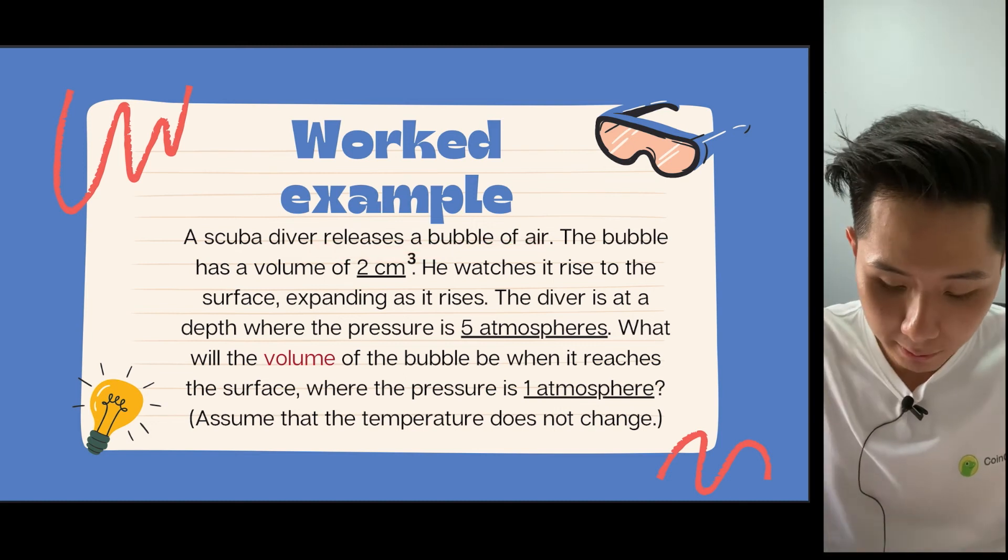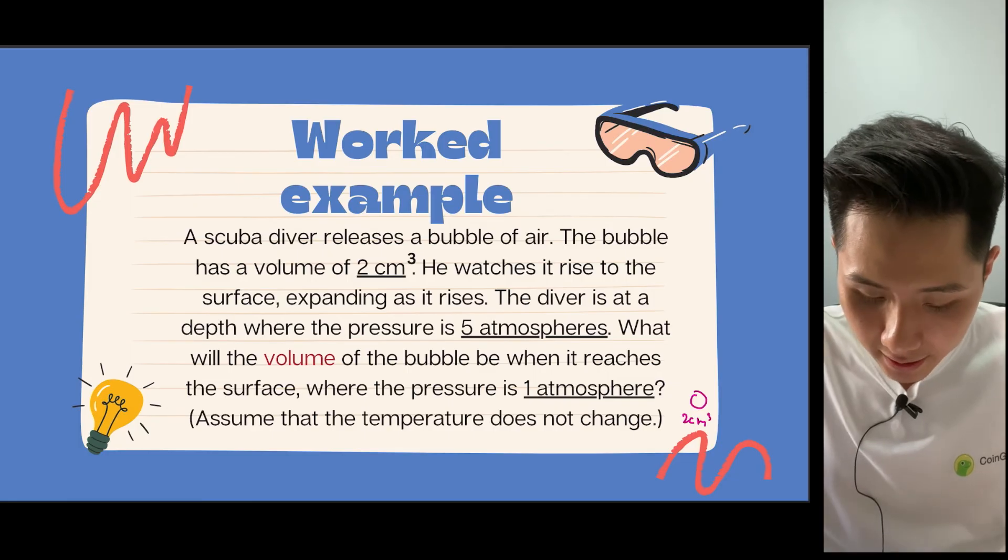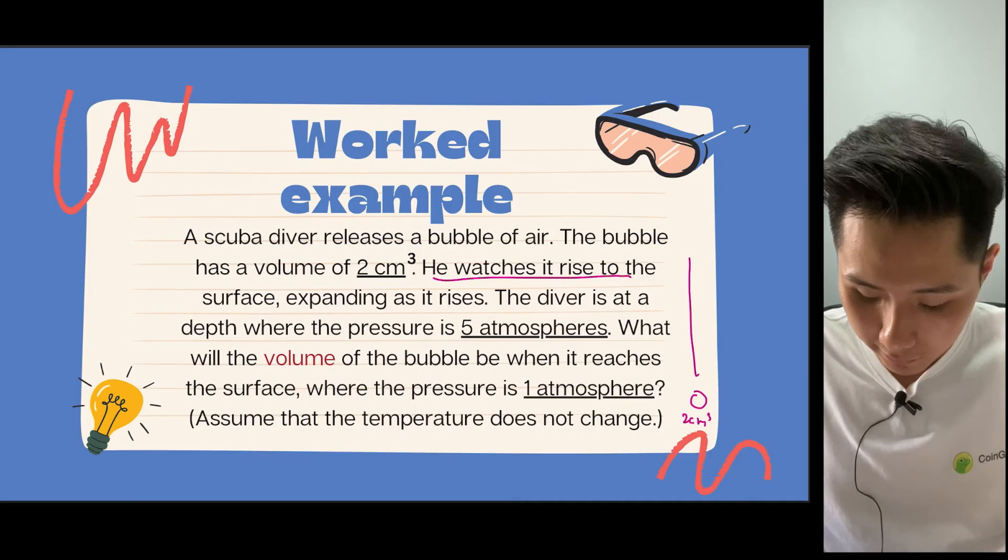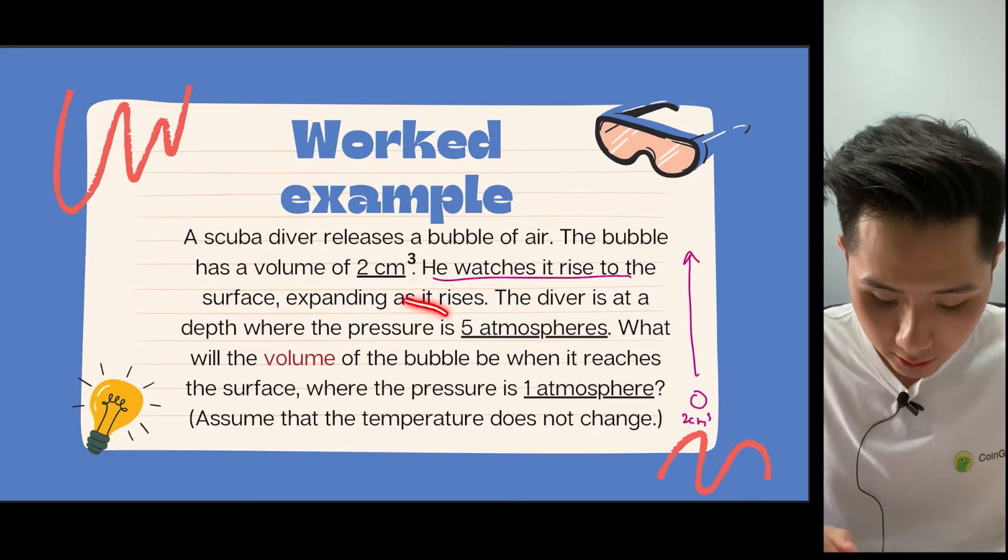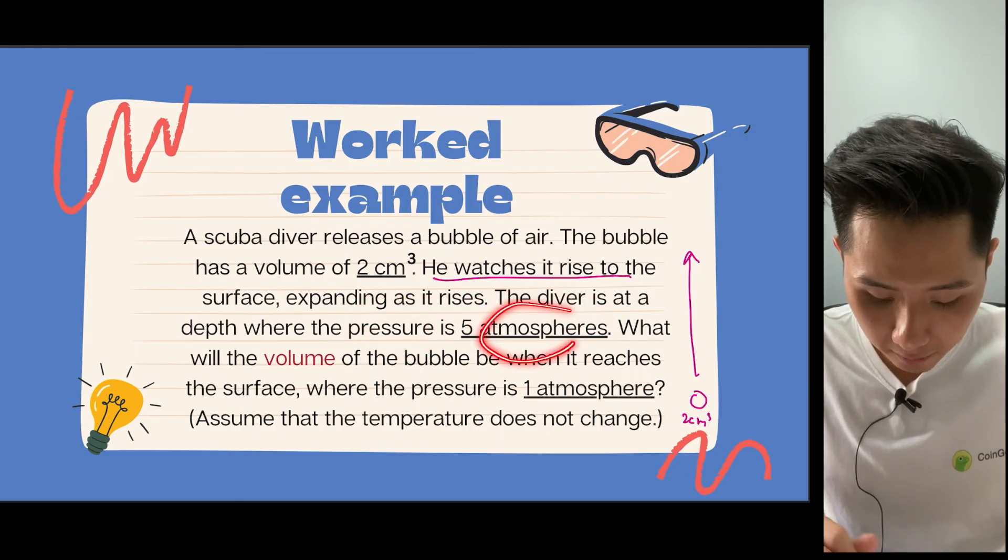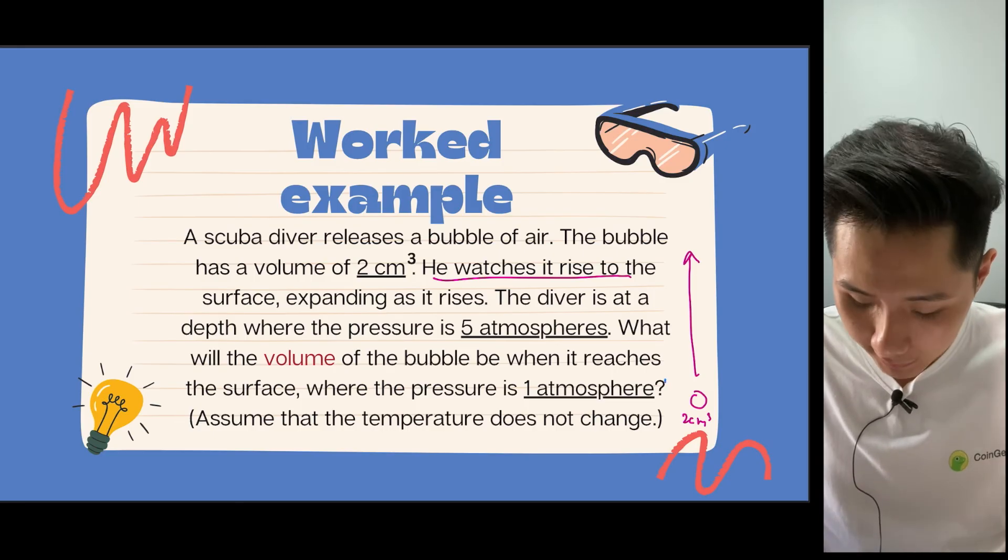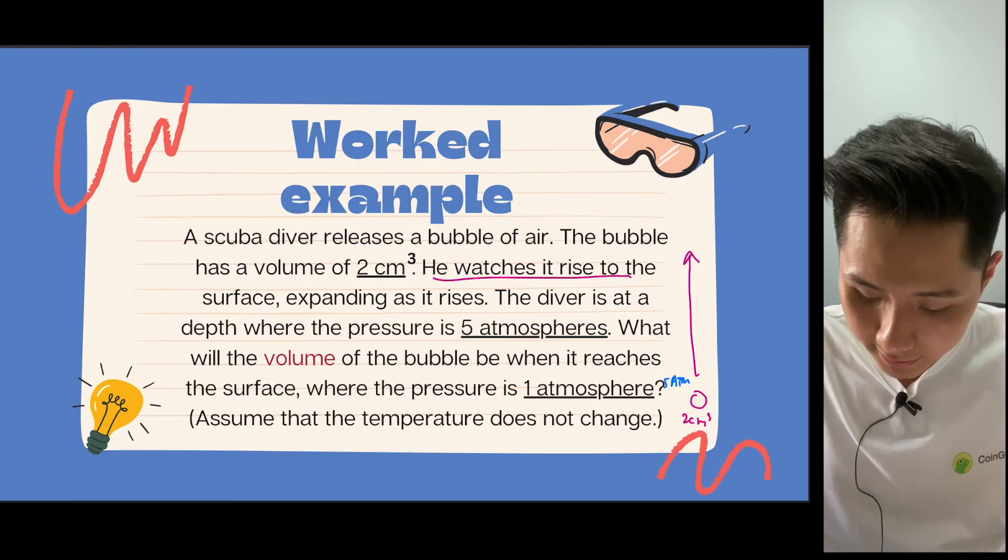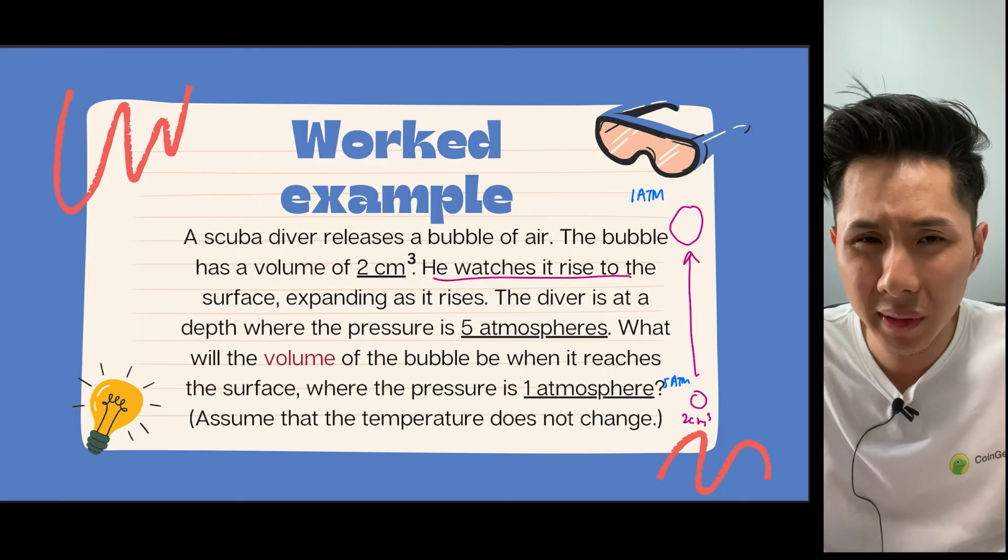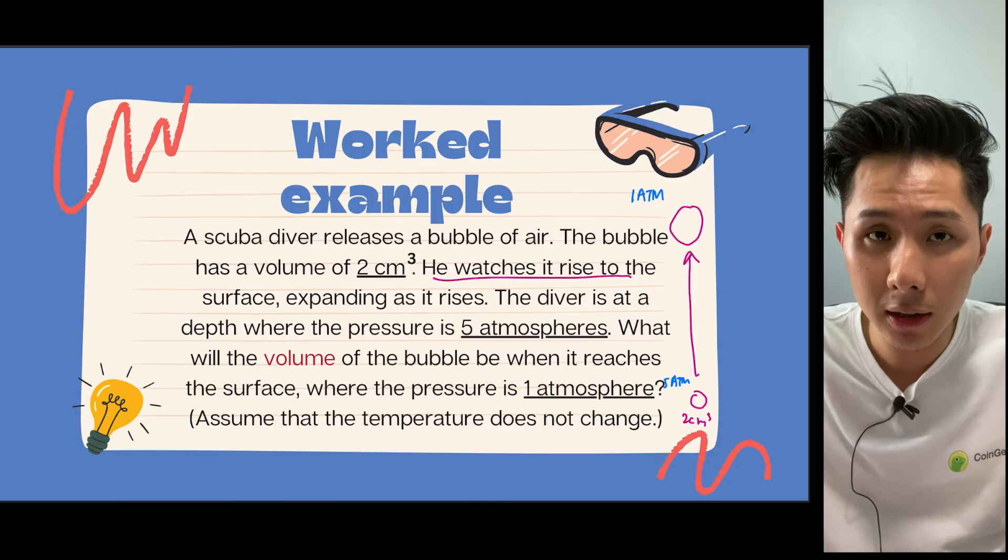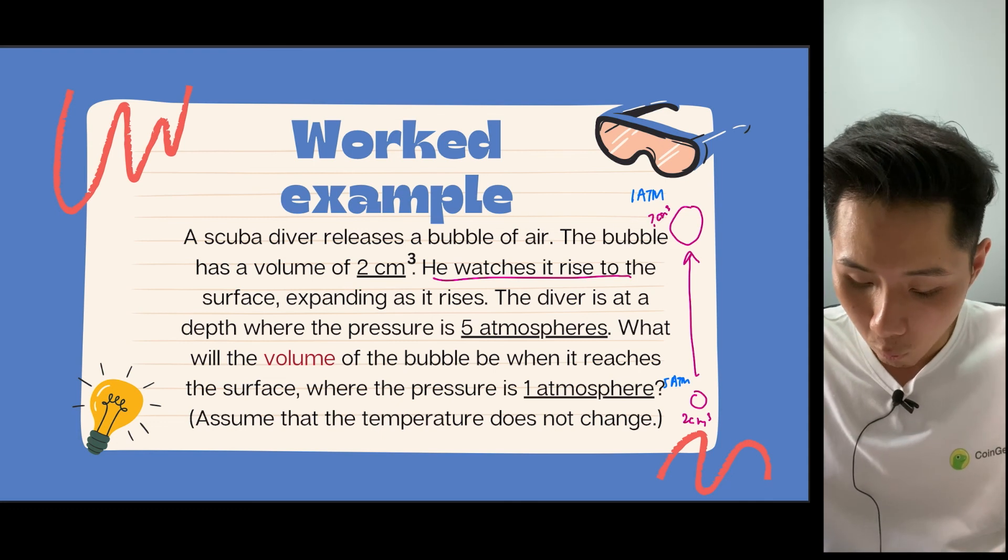A scuba diver releases a bubble of air. So imagine that this is the air particles that the scuba diver releases. And the bubble has a volume of 2 cm³. And as he watches the bubble rise up to the surface, he realizes that the pressure decreases from 5 to 1 atmosphere. So when the scuba diver releases the bubble, the depth which he's in has a pressure of 5 atm. But then as the bubble goes up, the pressure of it becomes 1 atmosphere. It makes sense because in the previous chapter, we learned that pressure is related to depth. The deeper you are in the water, the higher the pressure you're going to experience.